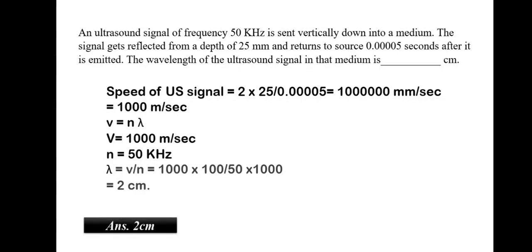Ultrasound signal of frequency 50 kilohertz is sent vertically down into a medium. The signal gets reflected from a depth of 25 millimeter and returns to the source 0.0005 seconds after it is emitted. The wavelength of the ultrasound signal in the medium is. So, we can tell that the speed of this ultrasound signal, we multiply the 25 into 2 because it is going to come back and divide it by the time it has taken. Now, we would get it in millimeter. So, we would convert it into meter. Now, we use the formula v is equal to n lambda. So, we already know what v is. We just have to find lambda. So, lambda would be nothing but v by n which would be around 2 centimeter. Lambda is nothing but the wavelength of the ultrasound signal.